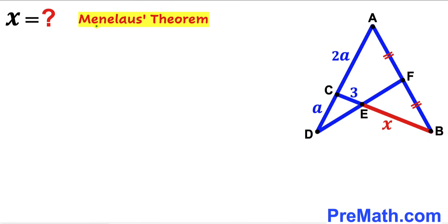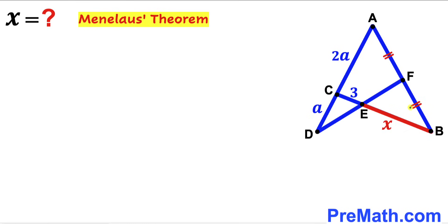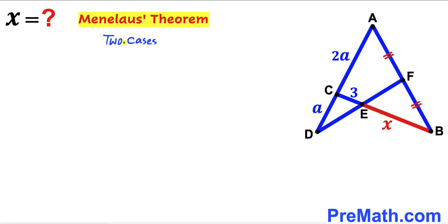We are going to solve this problem by using Menelaus' theorem. I will explain Menelaus' theorem and its flowchart as we go along. Since we are dealing with two triangles — triangle ABC and triangle ADF — we are going to explore two cases for Menelaus' theorem.